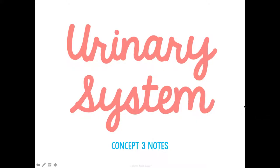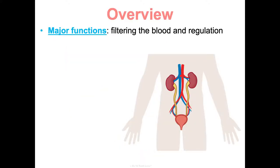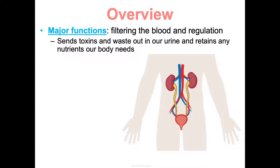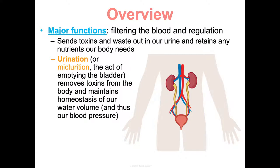Concept three: the urinary system, which can sometimes be referred to as the excretory system. The major functions are filtering your blood and regulation — sending toxins and waste out in our urine and retaining any nutrients the body needs. Urination is the act of emptying the bladder. It removes toxins from the body and maintains homeostasis of our water volume.